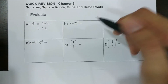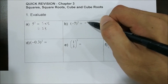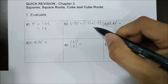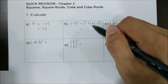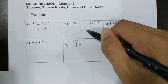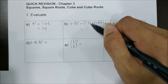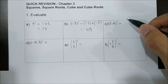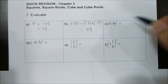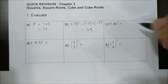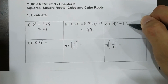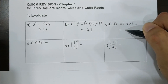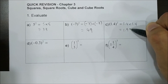Negative 7 squared means negative 7 multiplied by negative 7. Negative times negative, you get a positive number. 7 times 7, you get 49. 1.4 squared means 1.4 times 1.4, you get 1.96.